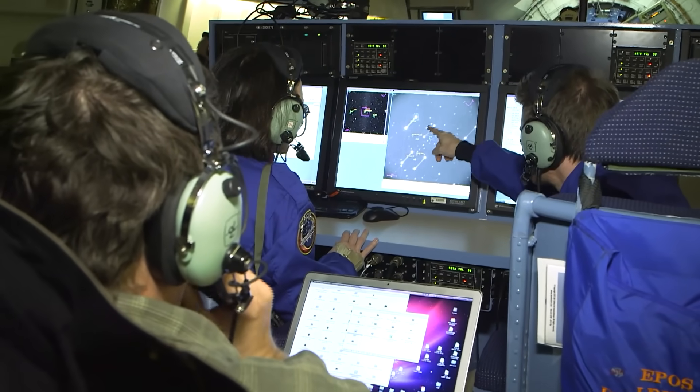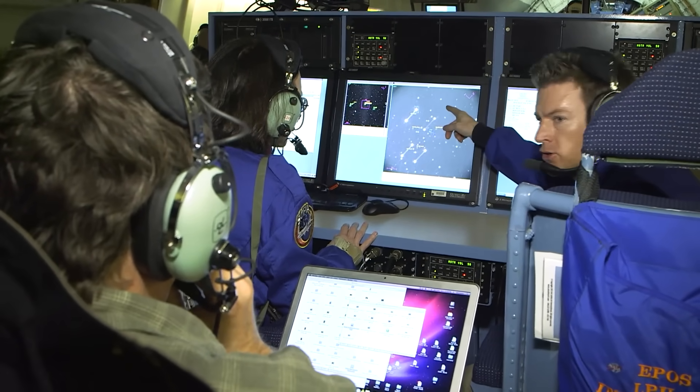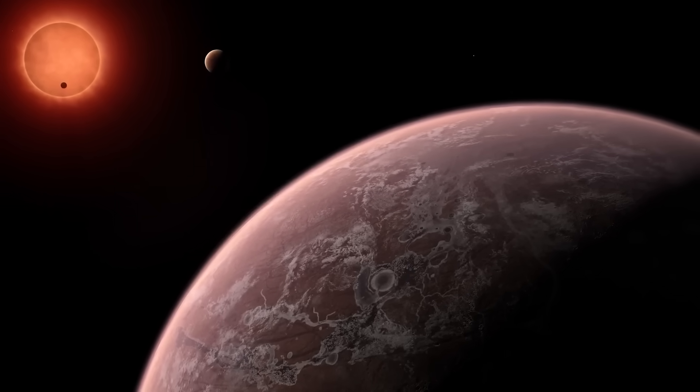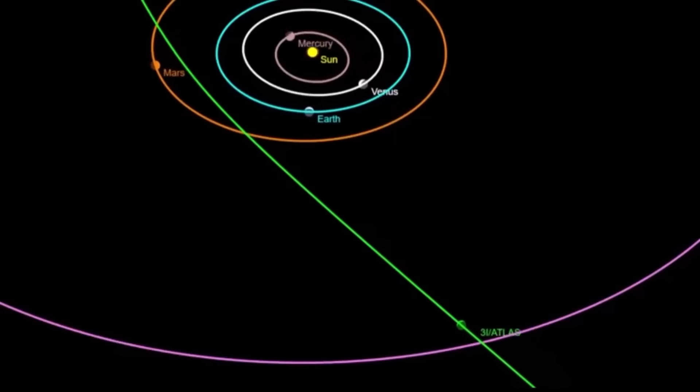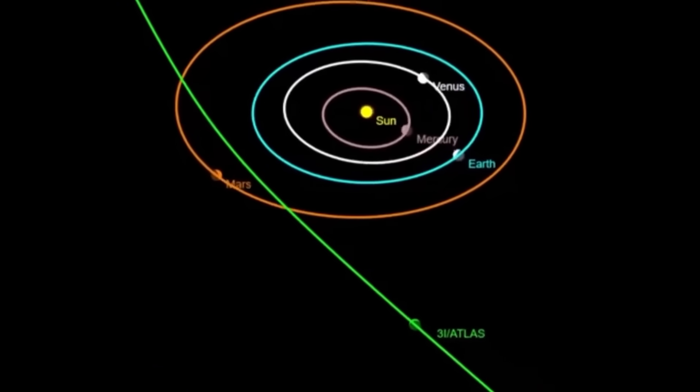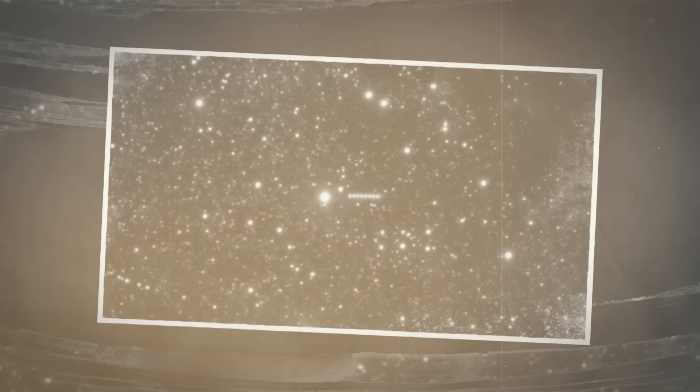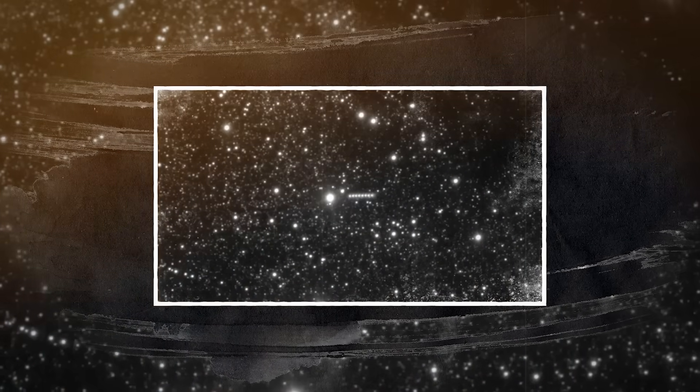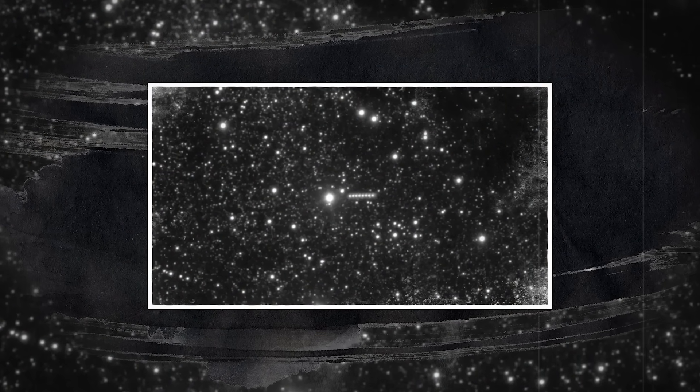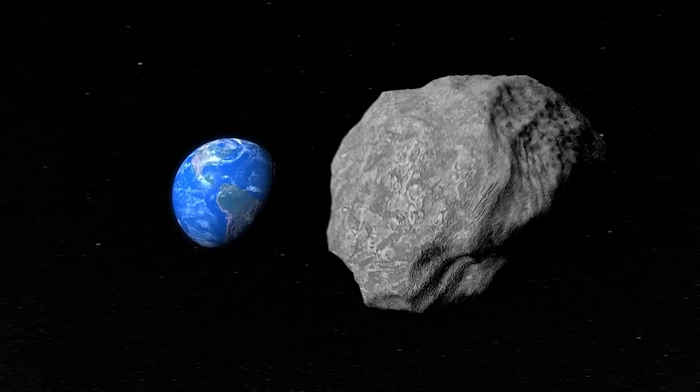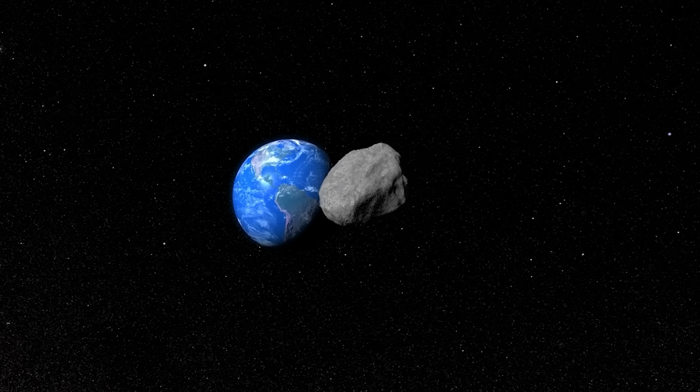NASA scientists are about to get their best look yet. As it passes near Mars, it will come within 18 million miles of the red planet, close enough for the Mars Reconnaissance Orbiter to turn its ultra-precise high-rise camera toward it. With a resolution of just 30 centimeters per pixel, even a single point of light could reveal the true scale of its surface. If that image shows a reflective, structured body instead of a rough rock, it could rewrite everything we think we know about interstellar travel.